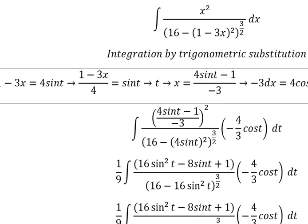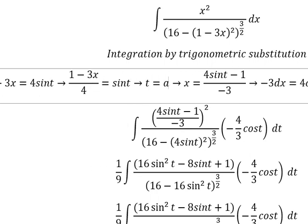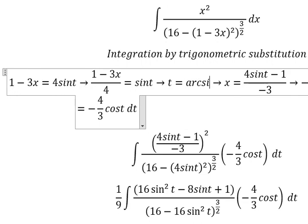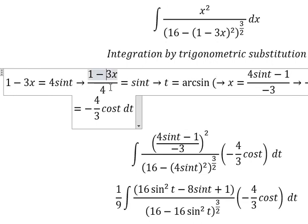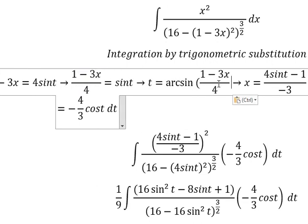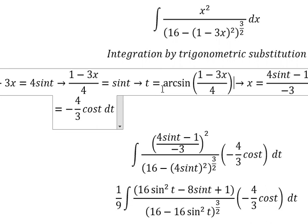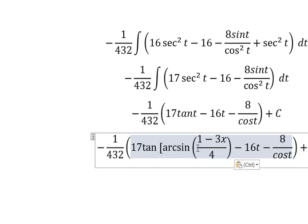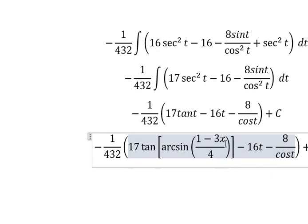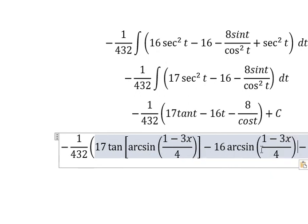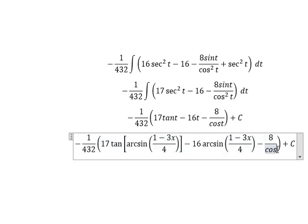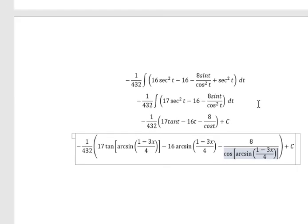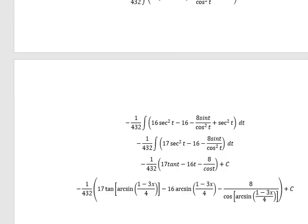We can find the value of t by taking the inverse of this expression. Then we divide both sides by 4 and substitute back to express everything in terms of the original variable. This is the end — thank you for watching.